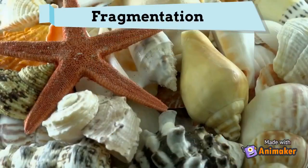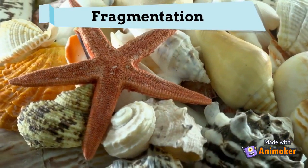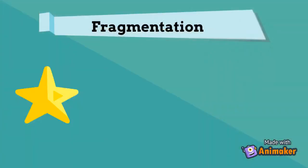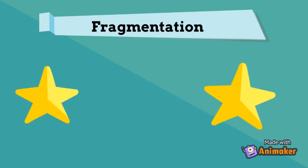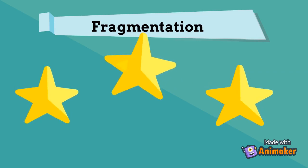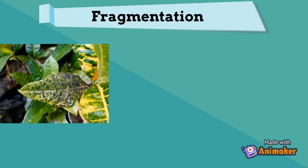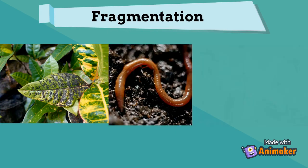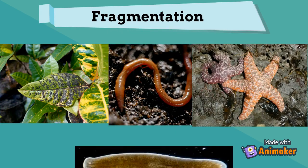Fragmentation is a form of cloning where an organism is split into fragments. The splitting may or may not be intentional. Each of these fragments develops into a mature, fully grown individual that is a clone of the original organism. If the organism is split any further, the process is repeated. Fragmentation is seen in many organisms such as molds, worms, starfish, and planarians.